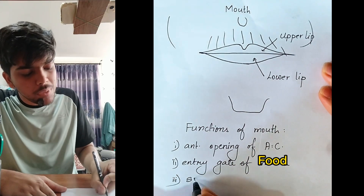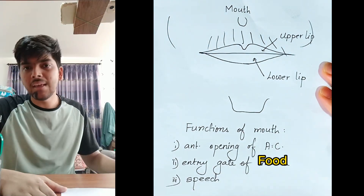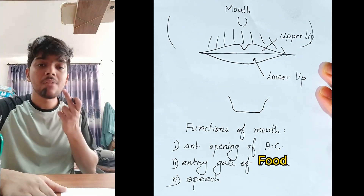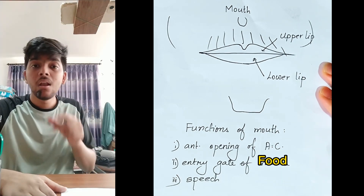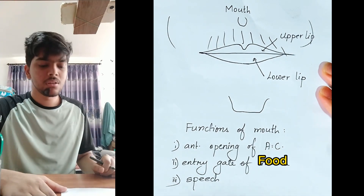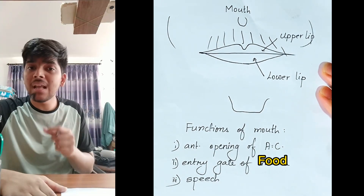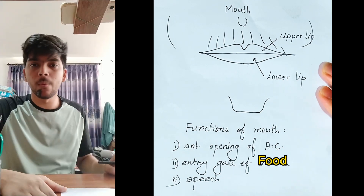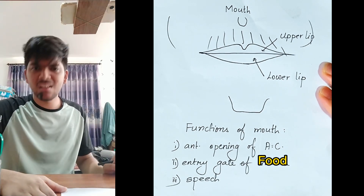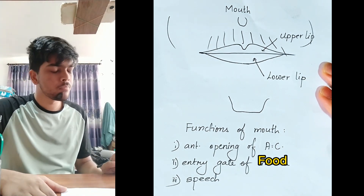Third function: the mouth is needed for speech. There are alphabets that you can only pronounce by touching your lips together. For example, the word 'speech' — try to say it without touching your lips. It is difficult. So the mouth is also needed for speaking.